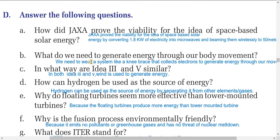Question b: What do you need to generate energy through body movement? We need to wear a system, like a knee brace, that collects and converts electrons to generate energy through our body movement. You can write: we need to wear a system that collects electrons to generate energy through our movement. Question c: In what way are ideas three and five similar? In both ideas, wind is used to generate energy.